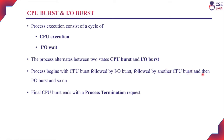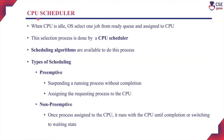Once the I/O burst is complete and the process is ready, it is assigned back to the CPU for another CPU burst cycle. Whenever an event occurs requiring I/O service, it enters another I/O burst, and so on. The final CPU burst ends with the process termination request, once the process completes its total execution.